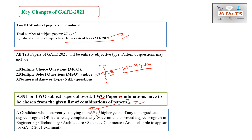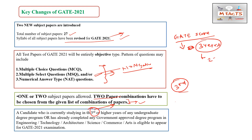Another key change is that third-year students can also write the GATE exam. Regarding the GATE score card, it is still valid for three years from the date the results are announced. You can use the GATE score for applying to PSUs, MTech/Masters programs, and many more opportunities. The link to the previous video on recent changes in GATE 2021 will be in the description.